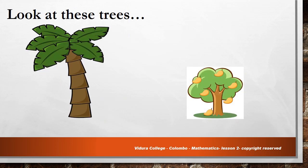Look at these trees. There is a coconut tree and there is a mango tree. Can you see a difference between their heights? Yes, the coconut tree is tall and the mango tree is short. Okay, my children. Now that you know what is tall and short, let's do some activities.